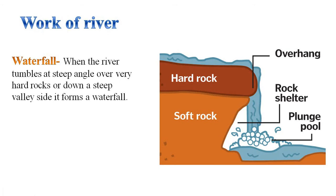Work of River. Let's see the landforms that are formed due to the work of rivers. Waterfall: when the river tumbles at a steep angle over very hard rocks or down a steep valley side, it forms a waterfall.